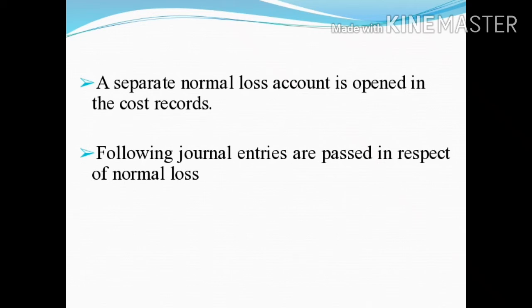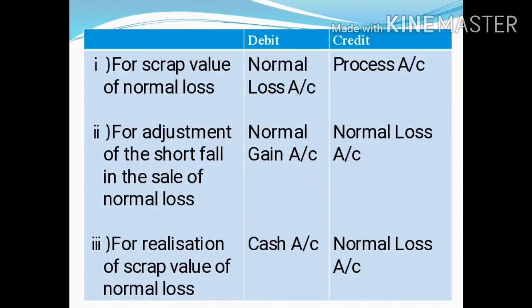A separate normal loss account is opened in the cost records. The following journal entries are passed in respect of normal loss. The first one is: for scrap value of normal loss, the journal entry is — Normal Loss Account debited and Process Account credited.